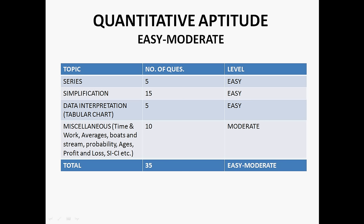10 questions from miscellaneous in which time and work, averages, probability, ages, profit and loss, boats and stream questions were there, and level of these miscellaneous were moderate. So overall quant was easy to moderate.